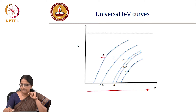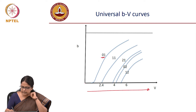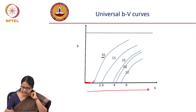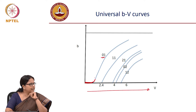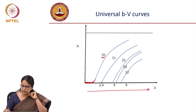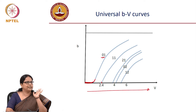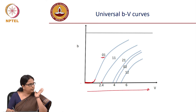This is the B value for the LP01 mode as the V number increases. This starts from 0 — there is no zero-crossing here. It should have actually slightly gone up from here, which says that there is no cutoff condition for the fundamental mode. Whereas for the first higher-order mode, it starts only from 2.4, or more precisely 2.4048. So if your V is less than 2.4048, you have only the fundamental mode existing in the system.